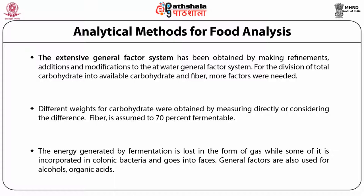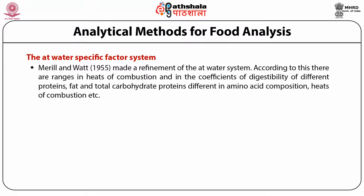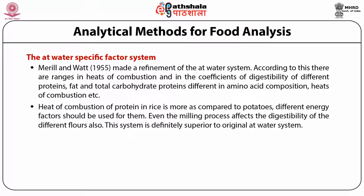General factors are also used for alcohols and organic acids. In the Atwater specific factor system, Merrill and Watt made a refinement of the Atwater system. According to this, there are ranges in heat of combustion and in the coefficients of digestibility of different proteins, fat and total carbohydrate. Proteins differ in amino acid composition and heat of combustion. For example, heat of combustion of protein in rice is more as compared to potatoes, so different energy factors should be used. Even the milling process affects the digestibility of different flours.